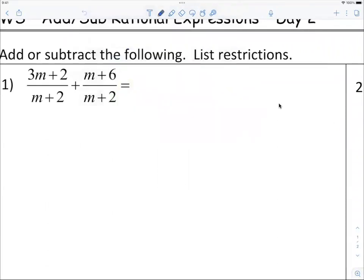Let's go ahead, and we will have a single denominator, m plus 2. So 3m plus 2 plus m minus 6.